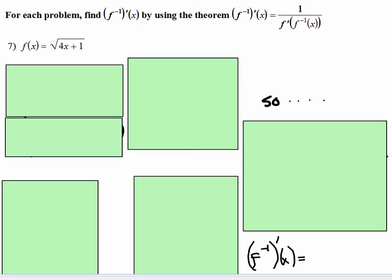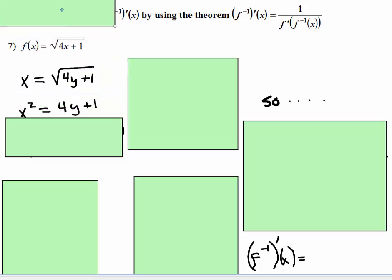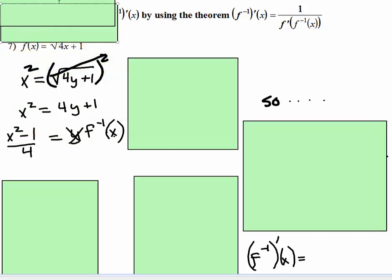So here we have a square root function, so we're going to change it to y equals, and we're going to swap out the x and the y. We're going to need to square both sides to get rid of that square root, then you're going to add 1 to both sides, and then the last step, you're going to divide by 4. So there is our inverse function right there, x squared, subtract 1, all over 4.